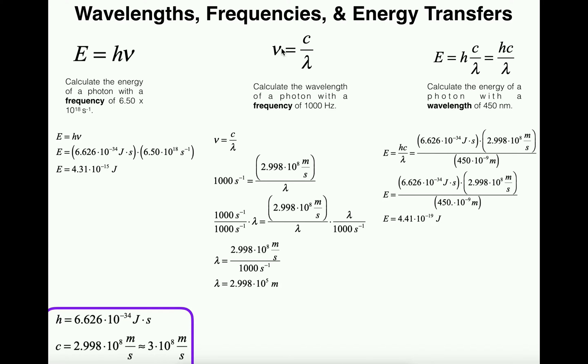This equation: nu or ν, this is our frequency, equals the speed of light in a vacuum which is this constant c, divided by the wavelength which is given by the Greek letter lambda. c is a constant. The speed of light in a vacuum is about 2.998 × 10⁸ meters per second. For the most part when you do this on a general chemistry exam, it's usually okay to round this to 3 × 10⁸ meters per second.